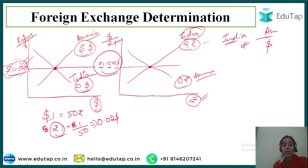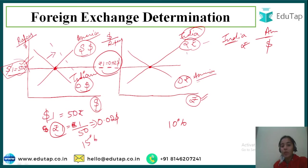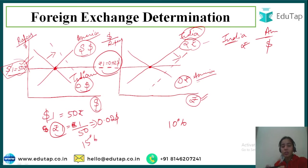Now let's say the interest rate in America is 15% and in India it is only 10%. Indians will want to save or invest in America, so the demand for dollars will increase because we want to benefit from the 15% interest rate. The supply of rupees will also increase because we are converting our rupees into dollars.